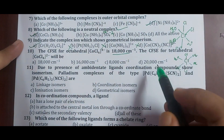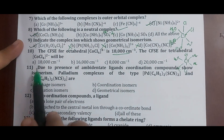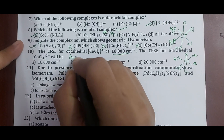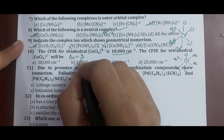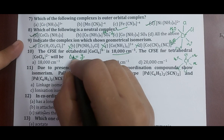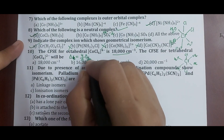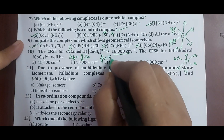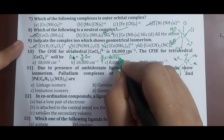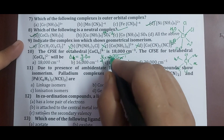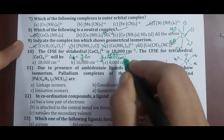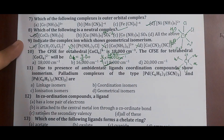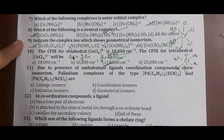Question 10: if the CFSE for an octahedral complex is 18,000 cm⁻¹, what is the CFSE for tetrahedral? For a tetrahedral complex, the crystal field splitting energy equals (4/9) × Δoct. So: (4/9) × 18,000 = 8,000 cm⁻¹. The correct answer is option C: 8,000 cm⁻¹.